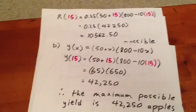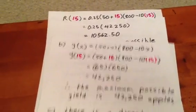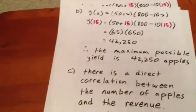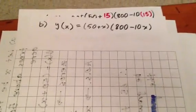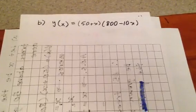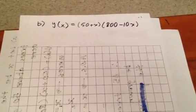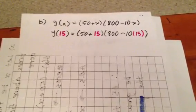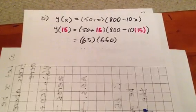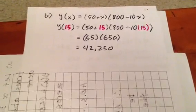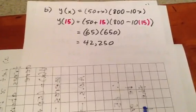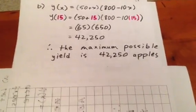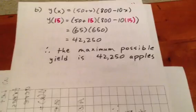Okay, we move to part B. Part B asks us what the maximum possible yield would be. Well, if X value of 15 gives us that maximum possible yield, what we do is simply sub 15 in for X in the yield equation. Subbing in a 15 for X and evaluating gives us a grand total of 42,250 apples. That's the most apples that she can possibly obtain on the farm under these conditions.